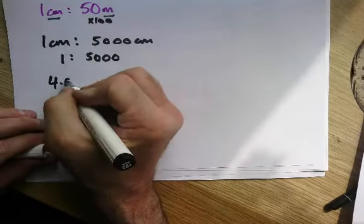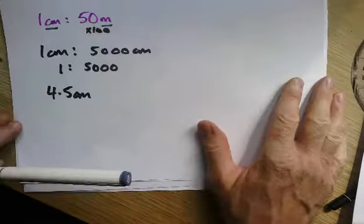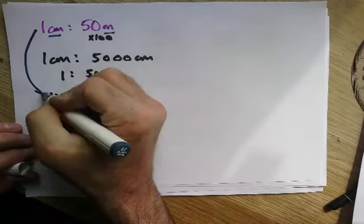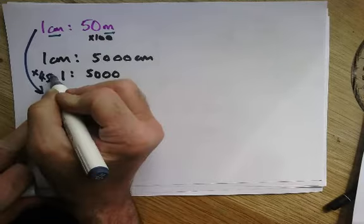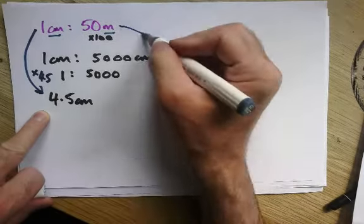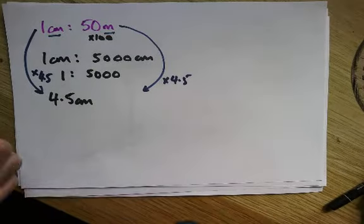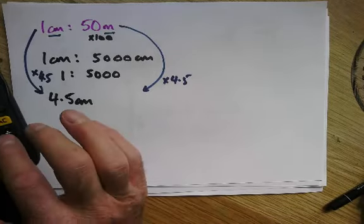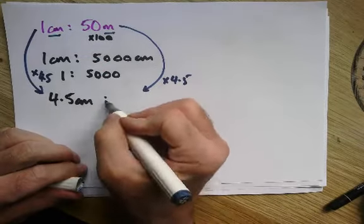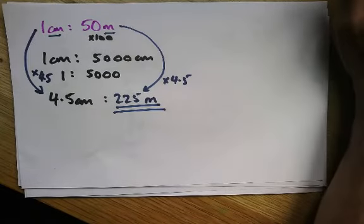Then it says the distance between two shops is 4.5 centimeters on the map. What is the actual distance? I'm going to go from one to 4.5, so I times by 4.5. I can times 50 meters by 4.5, which is pretty handy because you'll probably want it in meters, not centimeters. Times it by 4.5 and I get 225 meters. That's how far the shop is. Hopefully this helped.